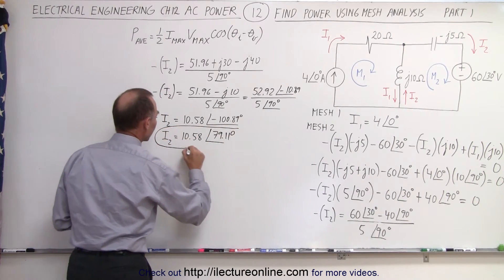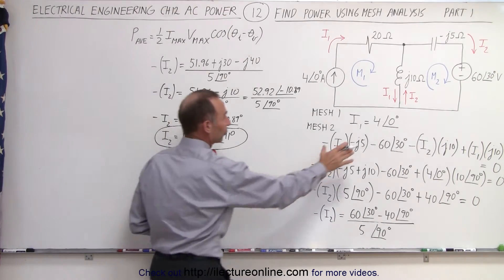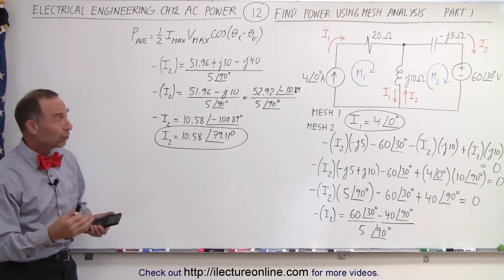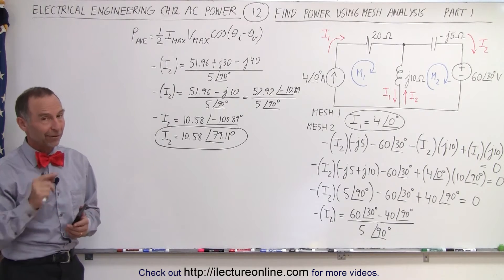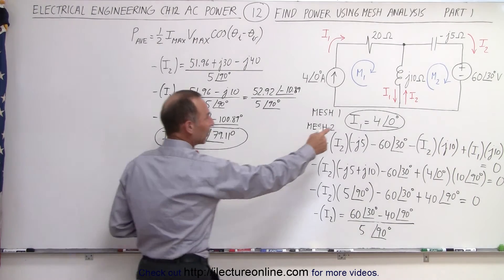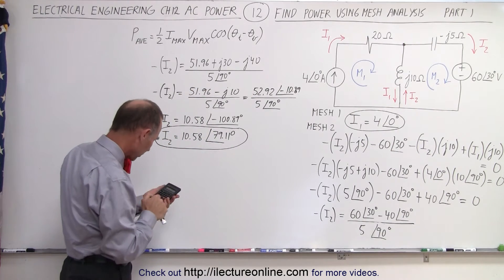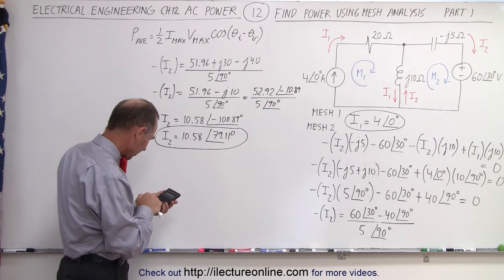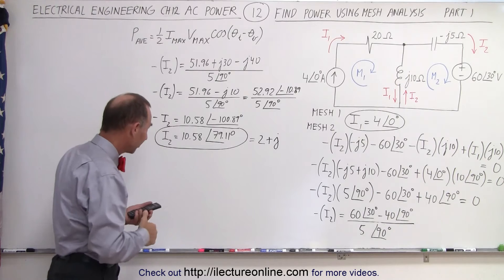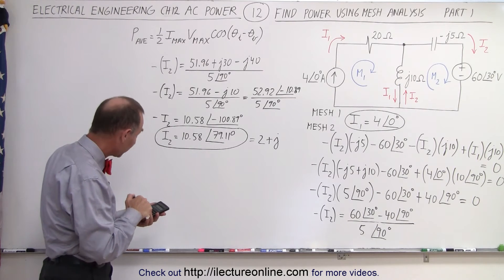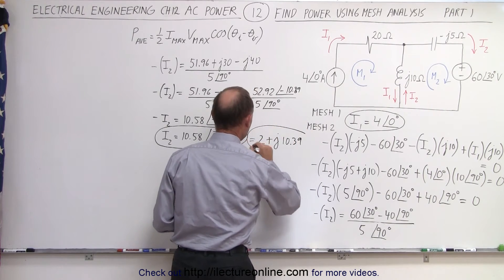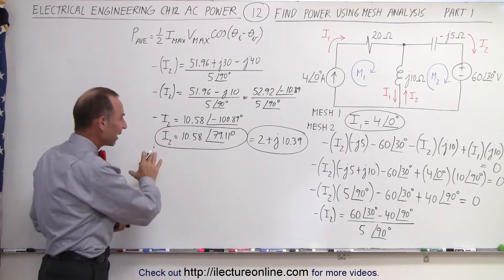So now we finally have current I2 in magnitude and phase angle format: 10.58 at 79.11 degrees. And we have current I1 at 4 at 0 degrees. Now we're in good shape. Let's also write I2 in rectangular form because we'll need to add or subtract it from I1. Taking cosine of 79.11 times 10.58 gives approximately 2, and sine of 79.11 times 10.58 gives 10.39. So I2 equals 2 + j10.39.